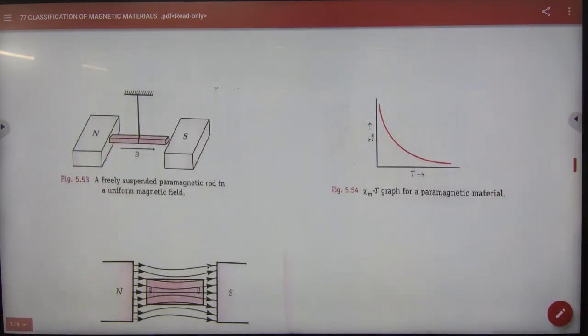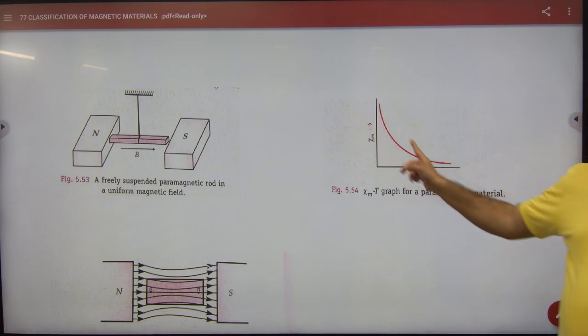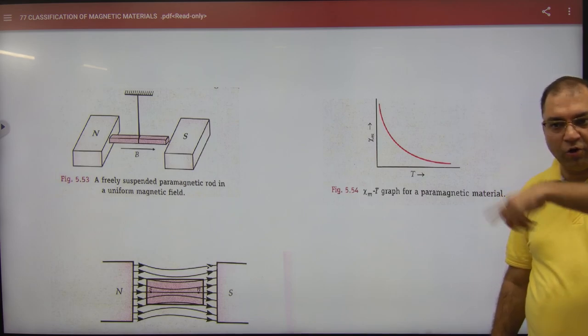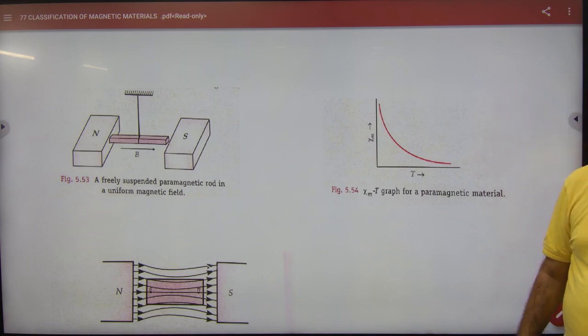Then we have done the properties of para or ferro. Para or ferro is inversely proportional to temperature. We will mark this graph. It is straight. Para or ferro is hyperbola. Right? Clear?